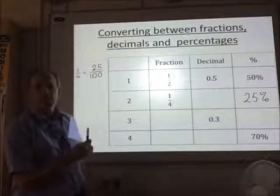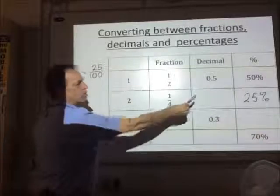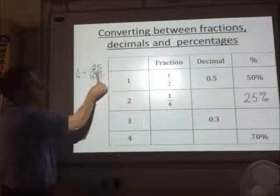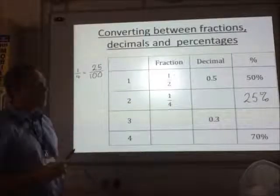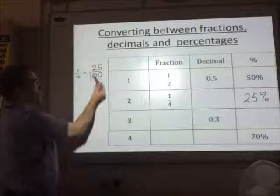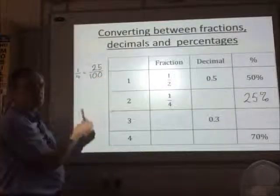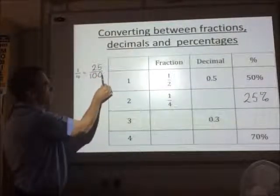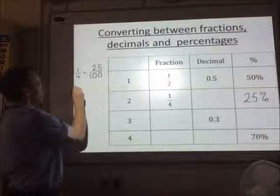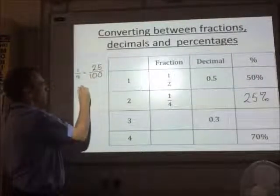So I now know that 25 out of 100 is exactly the same as 25%. Now, having converted my 1 quarter into 25%, and I've got it here as a fraction, I can write that as a decimal. This time I'm just dividing my top 25 by my bottom 100. So I've got 25 divided by 100.